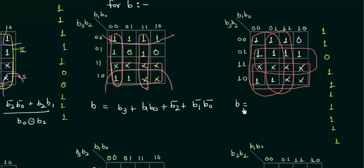This is C. So C is equal to: the first group gives us b3, the second group gives us b2, the third group gives us b1 bar, and the fourth group gives us b0. So this is C.